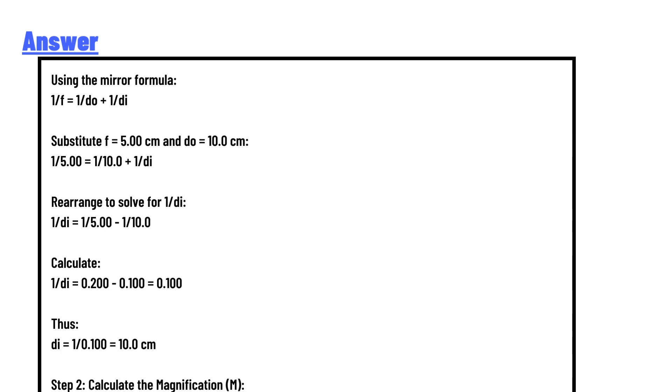Step 2: Calculate the magnification (m) using the magnification formula m = -di/do. Substitute di = 10 cm and do = 10 cm. m = -10/10 = -1.